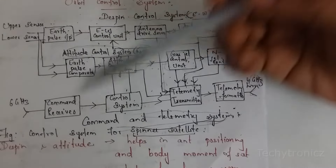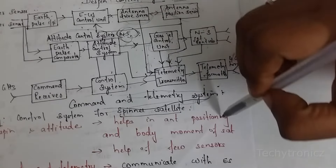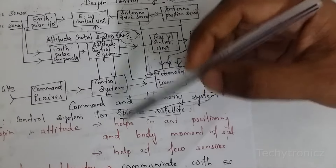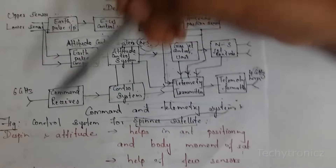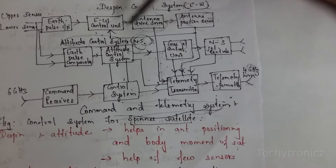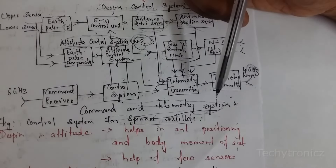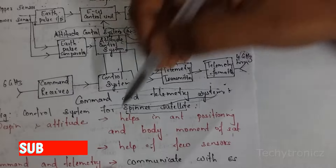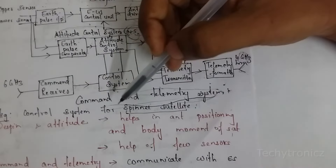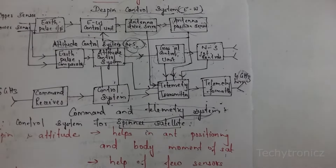The attitude and orbit control subsystem helps in antenna positioning and body movement of the satellite, with the help of various sensors used in the satellite. In the next video, we will cover the command and telemetry subsystem in detail. Thank you, students.